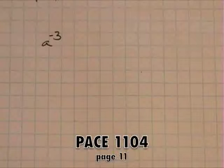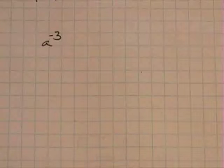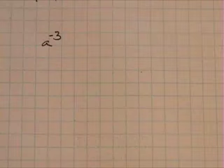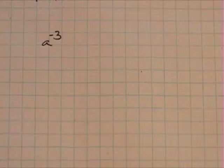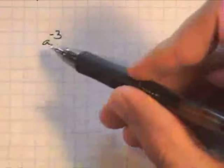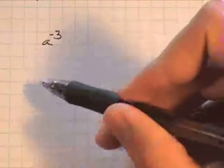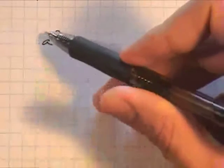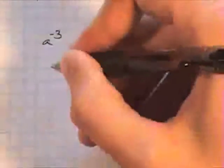You can change a negative exponent to a positive exponent by inverting the base and then changing the sign. This means that you're going to take the base and just put it 1 over, or pretty much under 1 as a numerator.